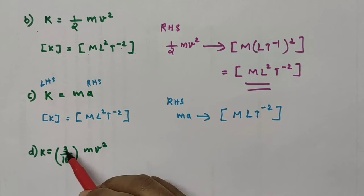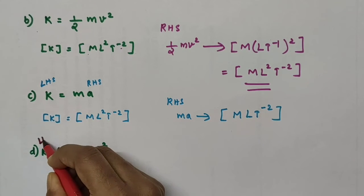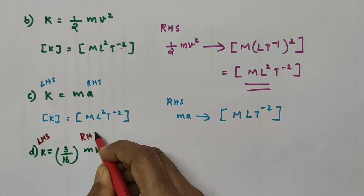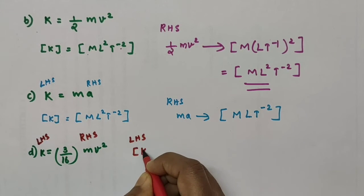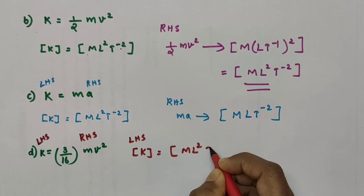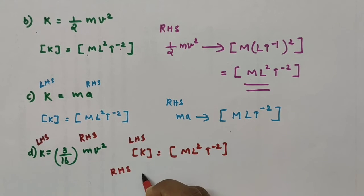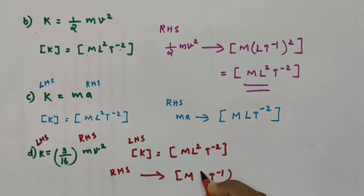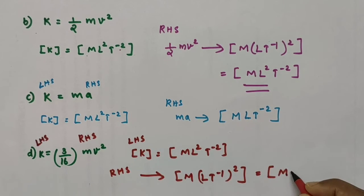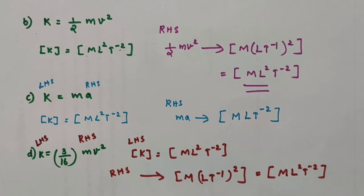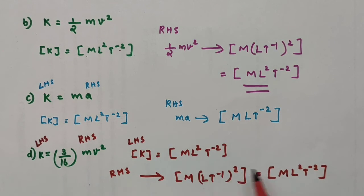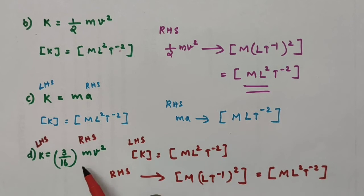The fourth equation is K equal to 3/16 MV². Dimensions of LHS (K) are ML²T⁻². On the RHS, 3/16 has no dimension, mass has dimension M, and V squared gives L²T⁻², so RHS has dimensions ML²T⁻². Comparing both sides: ML²T⁻² equals ML²T⁻². Both are the same, so this equation is dimensionally correct.